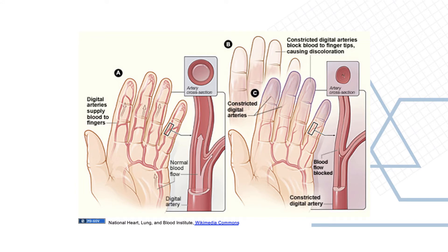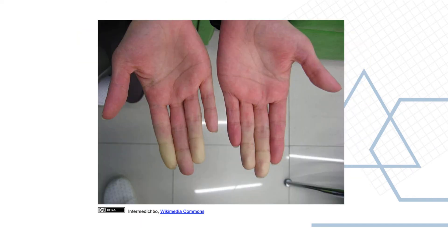This diagram depicts the various stages. The picture on the left shows the digital arteries with normal blood flow to the fingers, and the constricted blood flow on the right blocks blood to the fingertips causing discoloration. As shown, they turn white, and then there is a pool of blood congestion which causes them to turn blue — a classic example of Raynaud's phenomenon.